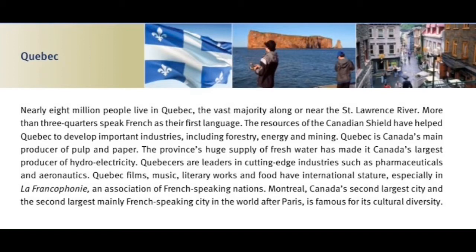Quebec. Nearly 8 million people live in Quebec, the vast majority along or near the St. Lawrence River. More than three-quarters speak French as their first language. The resources of the Canadian Shield have helped Quebec to develop important industries, including forestry, energy and mining. Quebec is Canada's main producer of pulp and paper. The province's huge supply of fresh water has made it Canada's largest producer of hydroelectricity. Quebecers are leaders in cutting-edge industries such as pharmaceuticals and aeronautics.